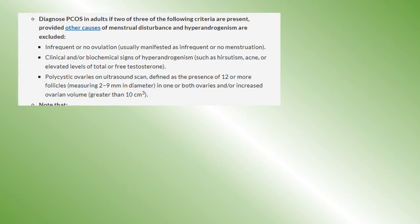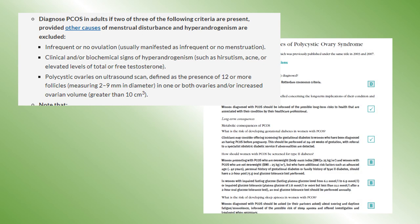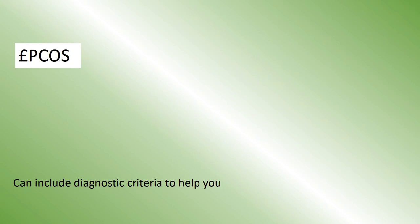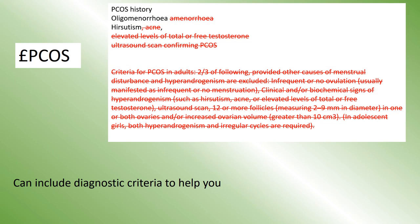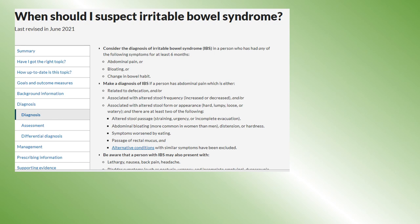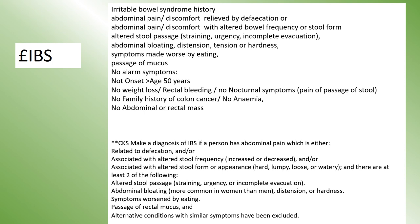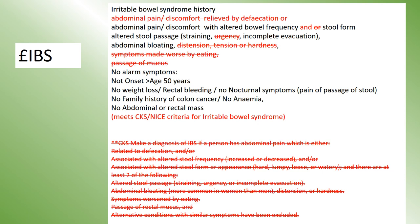Polycystic ovaries is a condition I always need to look up the diagnostic criteria for, so a good reason to have a history shortcut. My PCOS history shortcut includes the diagnostic criteria, and when I see the patient I can amend it and just remove the diagnostic criteria. Irritable bowel syndrome is another condition I often find myself looking up to be clear on the diagnostic criteria, so another reason to incorporate them into a text expander. Here's my IBS history text expander with the criteria below for reference, and here it is in use.